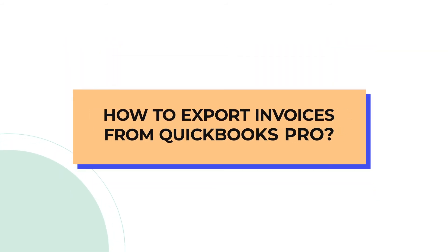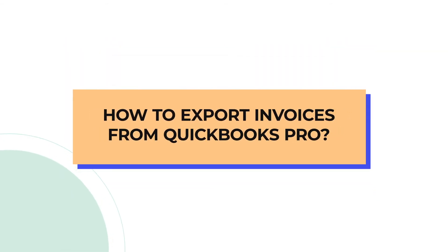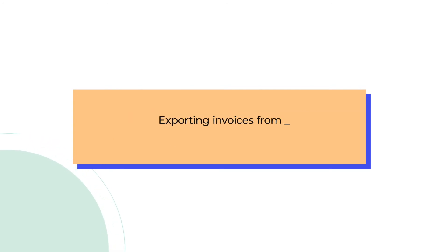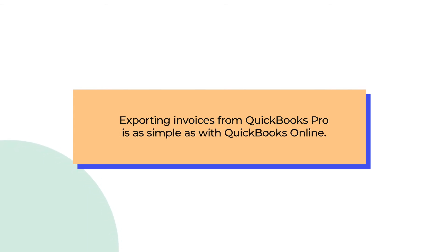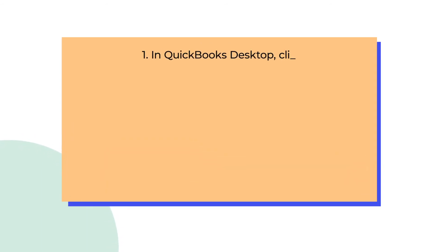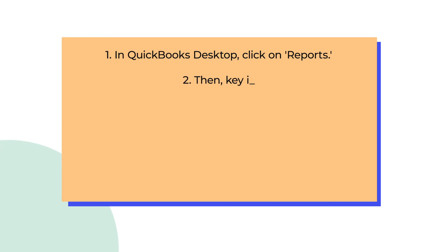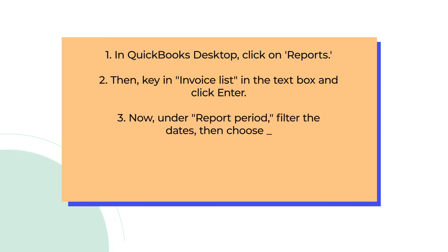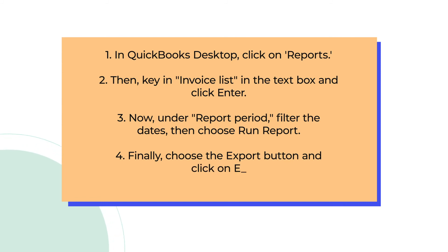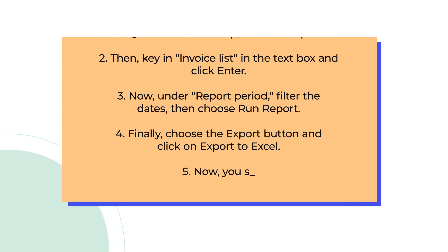How to export invoices from QuickBooks Pro? Exporting invoices from QuickBooks Pro is as simple as with QuickBooks Online. Steps. First, in QuickBooks Desktop, click on Reports. Then, key in Invoice List in the text box and click Enter. Now, under the Report Period, filter the dates then choose Run Report.